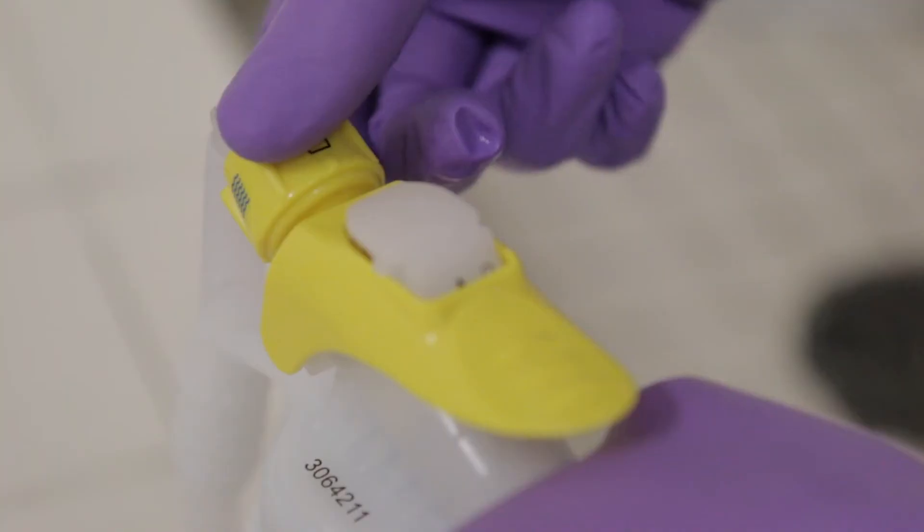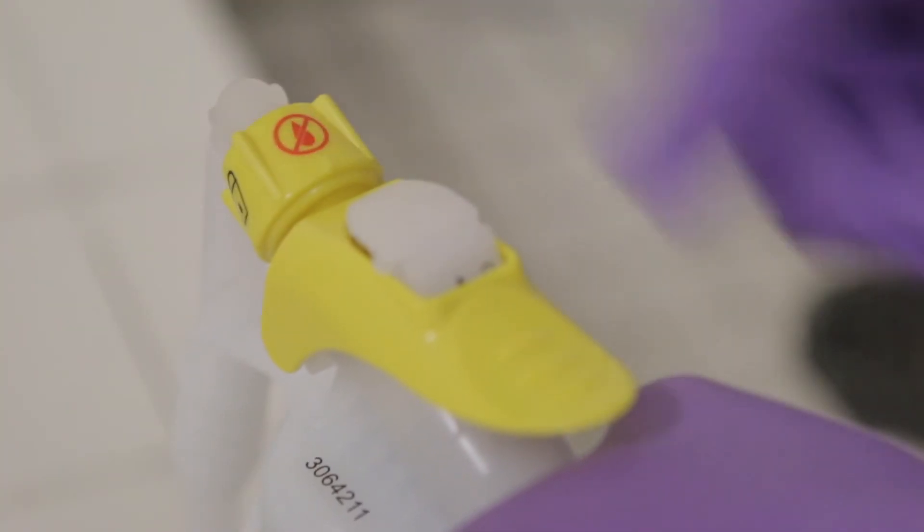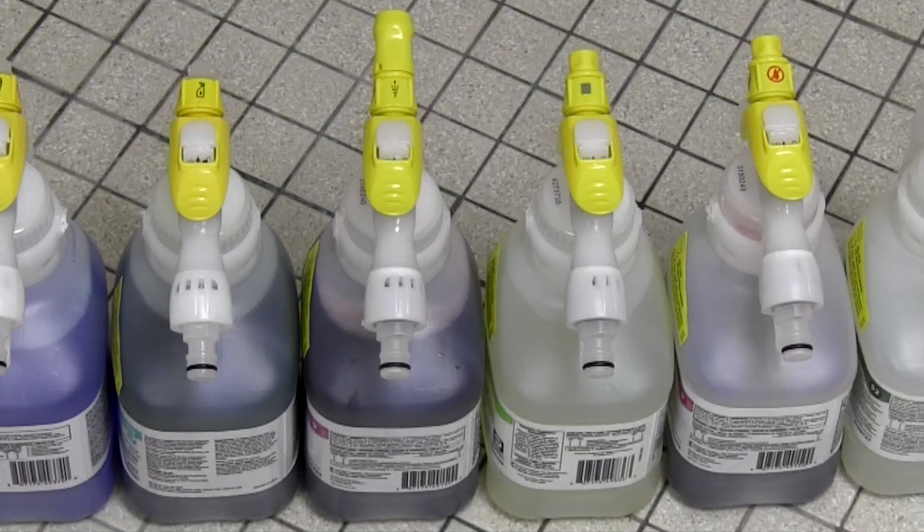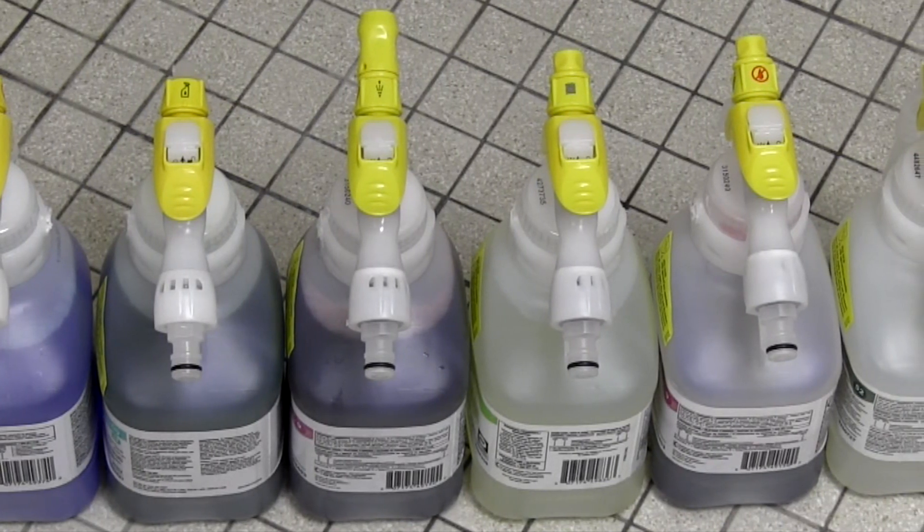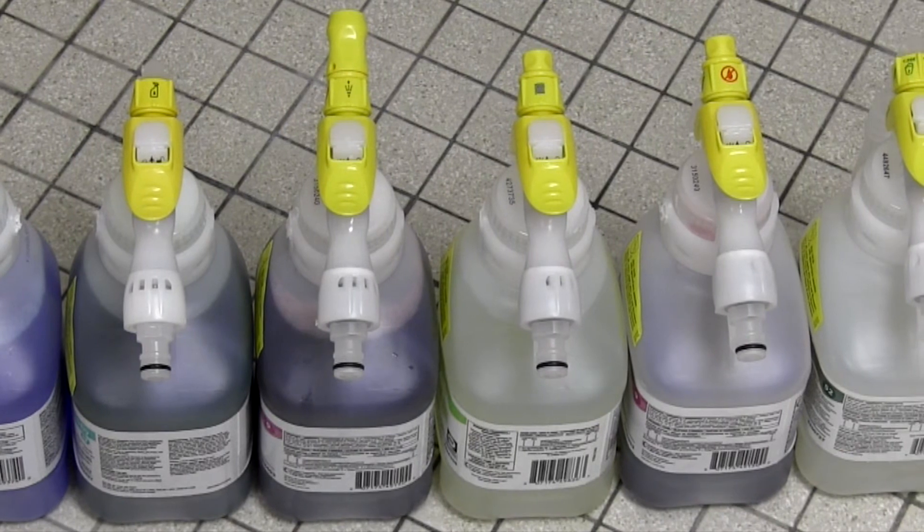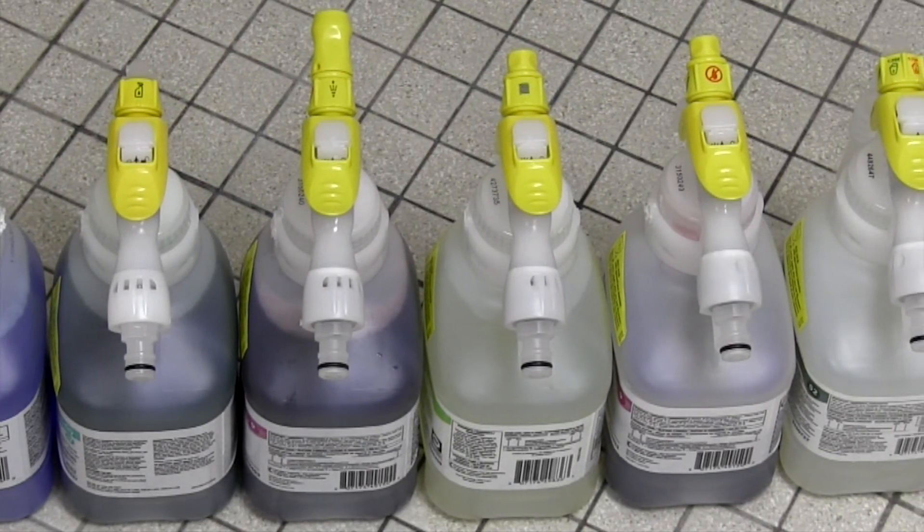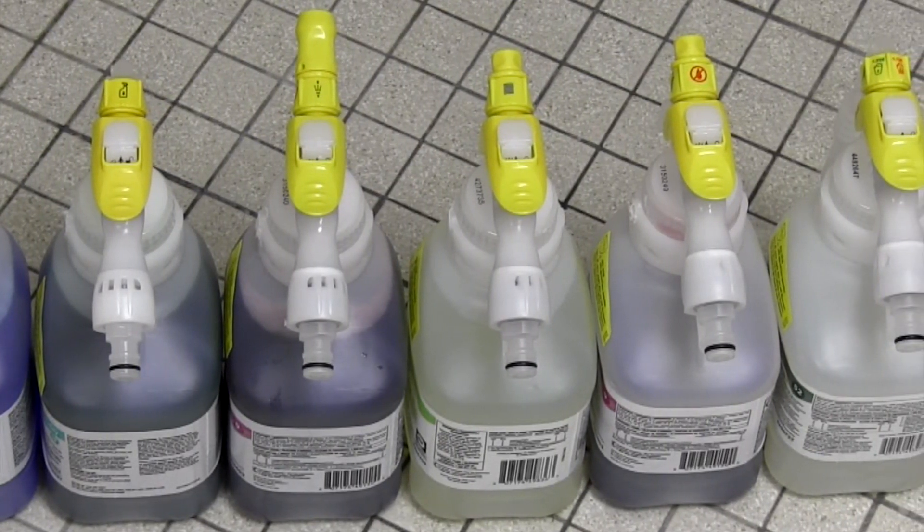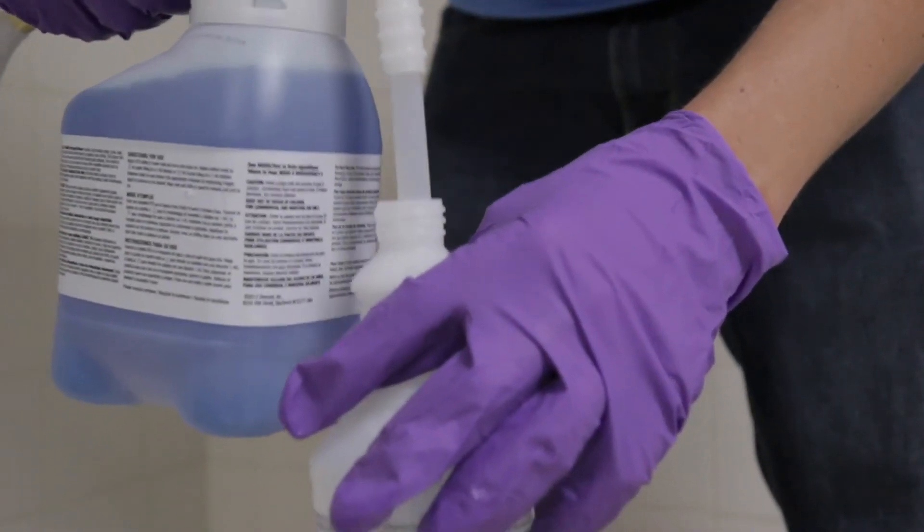A drop with a circle and line through it indicates that the selector is in the off position. The selector may also include a spray icon in select units. When more than one drop is shown, this indicates a stronger dilution rate. Check the product label for specifics on different dilutions and applications.